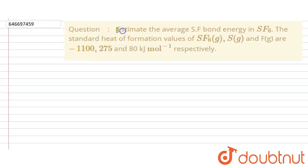Estimate the average S-F bond energy in SF₆. The standard heat of formation values of SF₆, S, and F are -1100, 275, and 80 kilojoule per mole respectively. So we have to find the average SF bond energy.